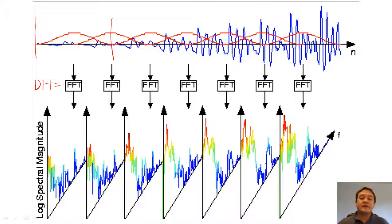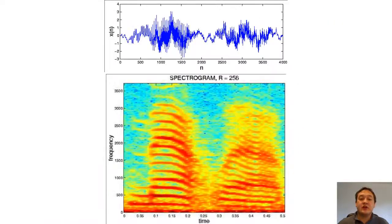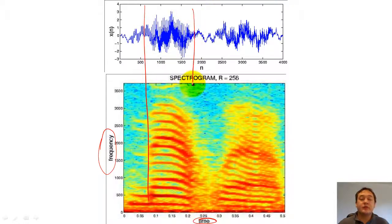We can then place all of these DFTs together in a single graph called a spectrogram. In the top graph, we have a speech signal that changes over time. The bottom graph is our spectrogram. The left axis corresponds to the frequencies of our DFTs, and the bottom axis corresponds to the successive window functions. Notice how the spectrogram changes with the speech signal.